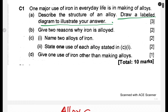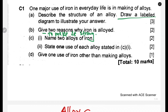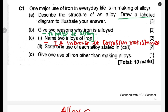Another question asks: give two reasons why iron is alloyed — in other words, why is iron not mainly used in its pure state? We can say: first, to make it stronger, since iron in its pure state is weak; and second, to increase its corrosion resistance.